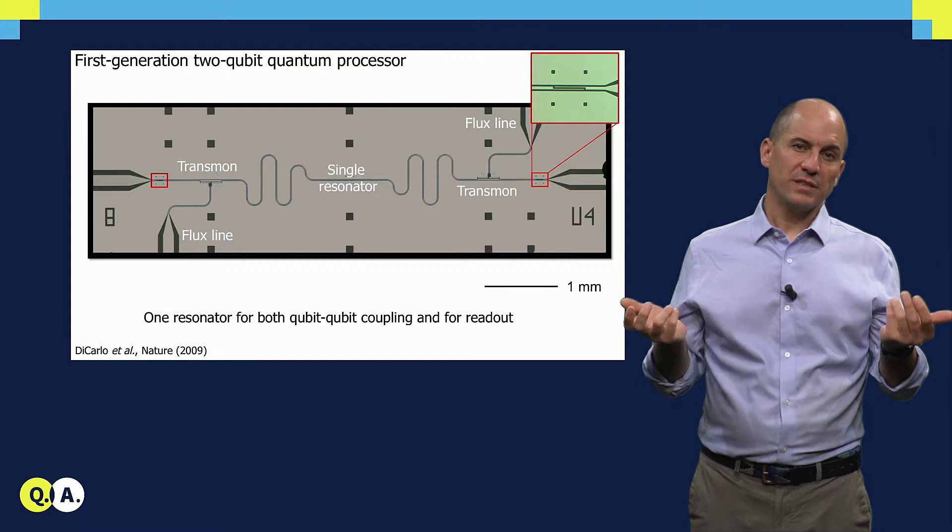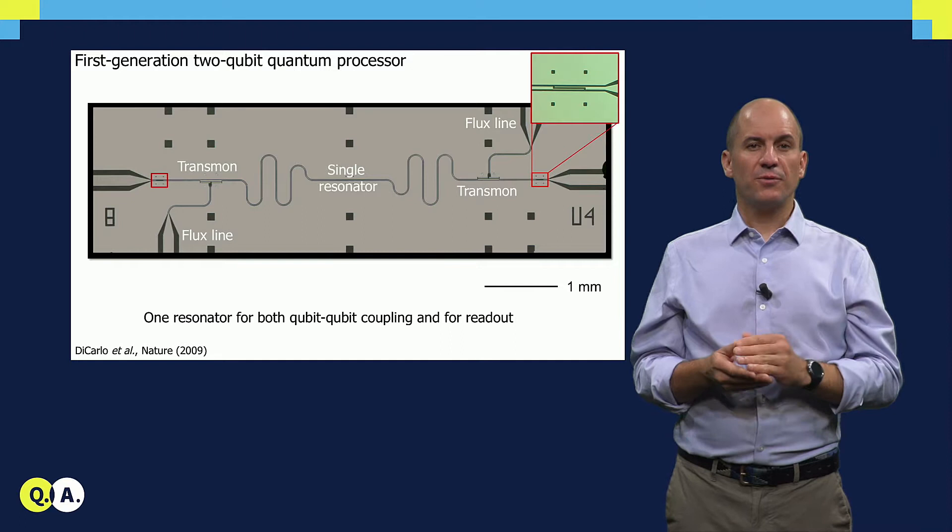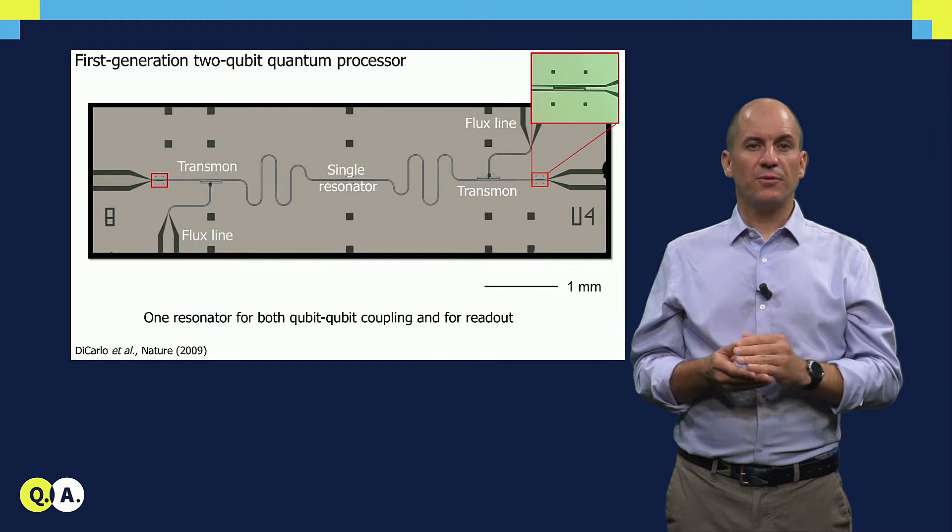The resonator has capacitive terminations at both ends, so it's a half-wave or lambda over 2 resonator. The optimal parameters of a resonator, for readout and for coupling, are often in conflict with one another. For this reason, the next generation of processors that we built in Delft uses different resonators for these functions.